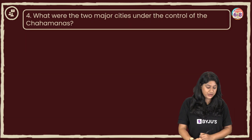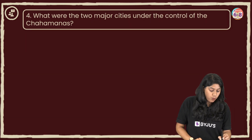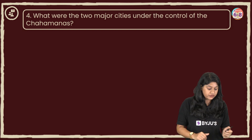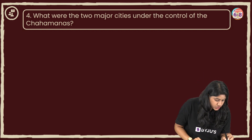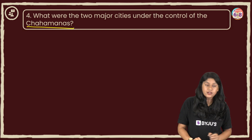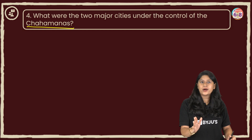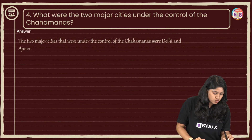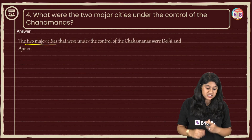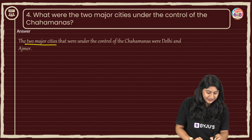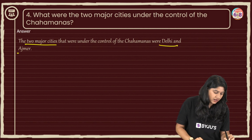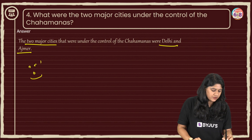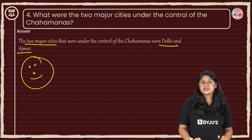Moving to the next question: what were the two major cities under the control of the Chahamanas? This is a very straightforward, easy question. The answer is that the two major cities under their control were Delhi and Ajmer. That's a very straightforward answer.